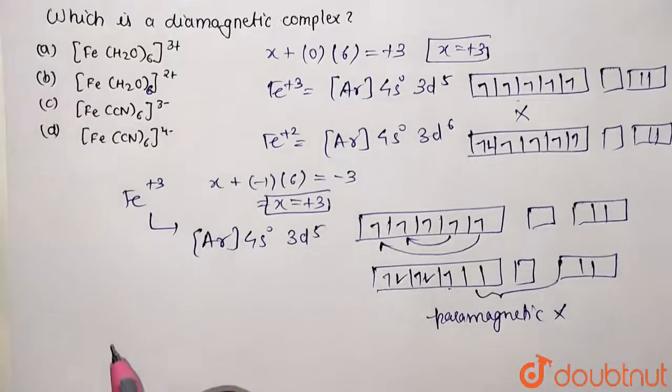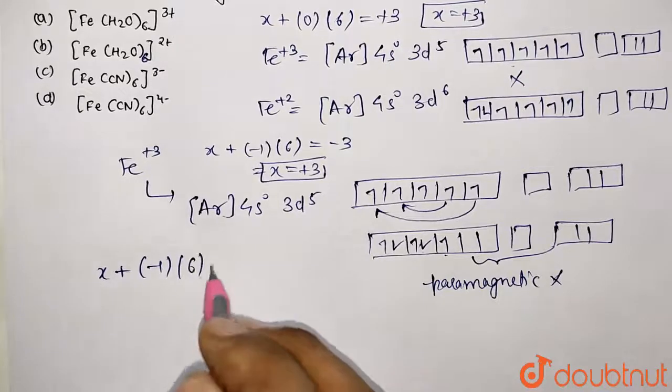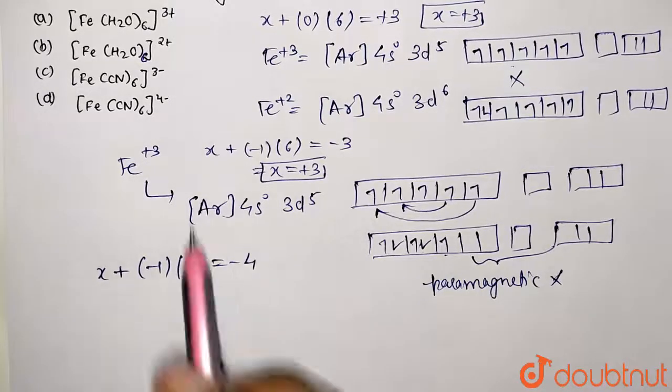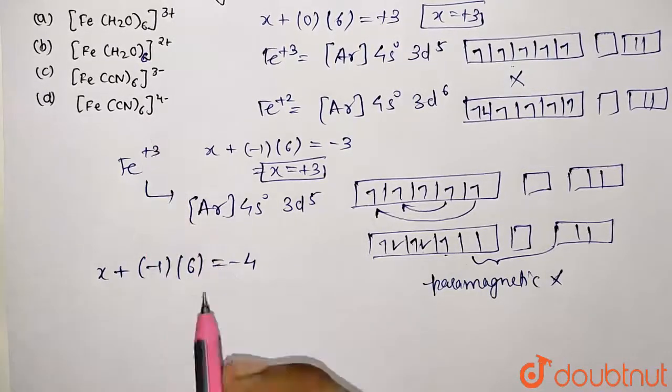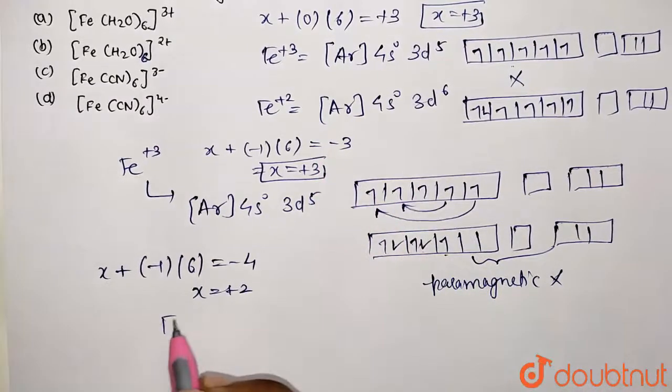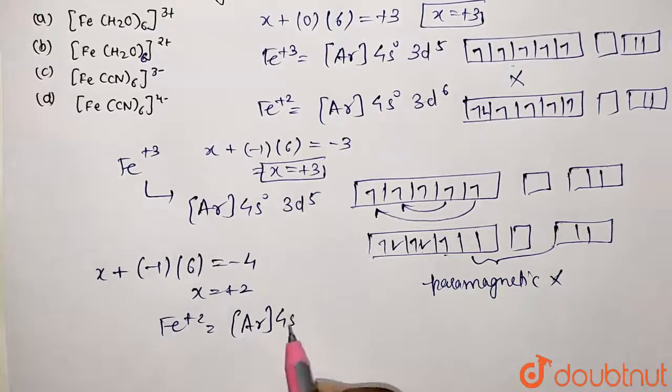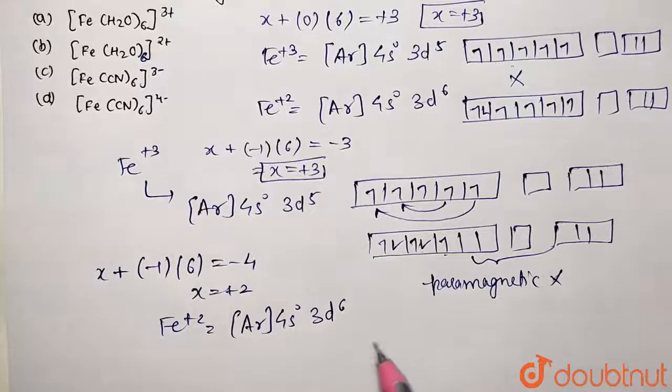Let's go with the last one, which is x minus 1 multiplied by 6 and overall charge minus 4 given on the coordination entity. So this turns out to be positive 2. We have already calculated the configuration for positive 2, so it's going to be just argon, 4s will be 0 and corresponding 3d6.